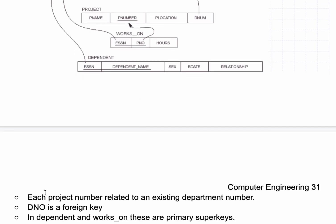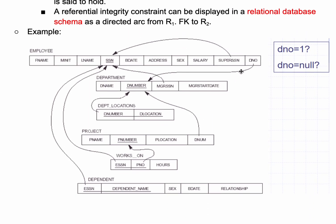We have the DNO as a foreign key. That's the one on the top right. It's a foreign key and it can relate to our DNUMBER.